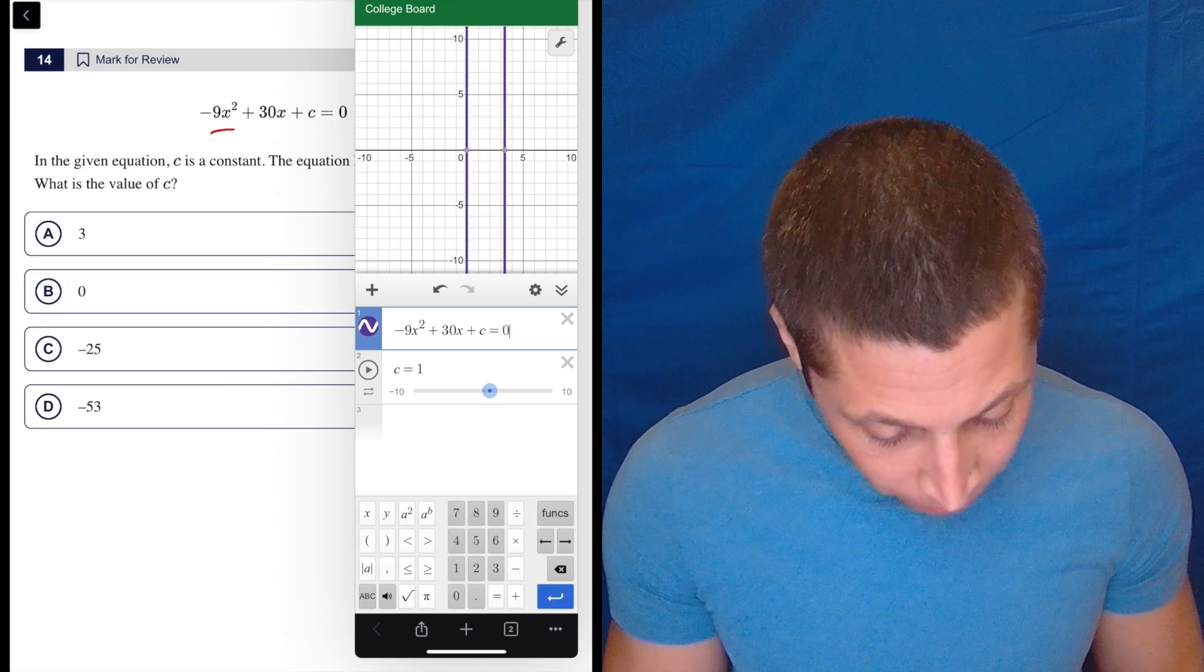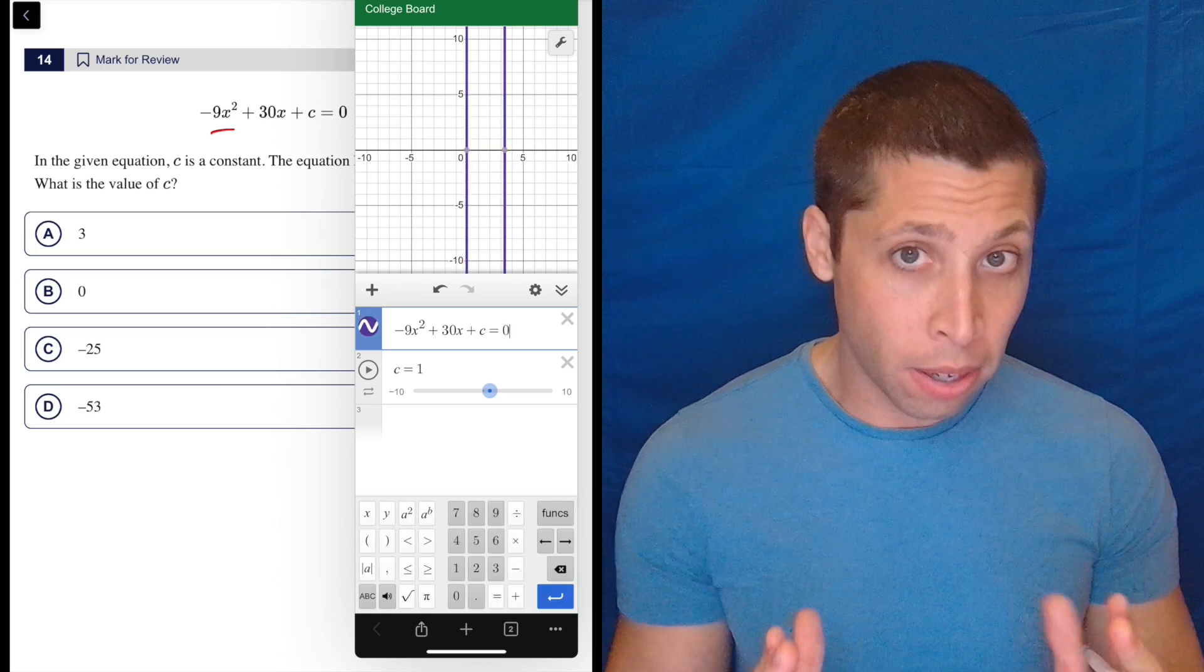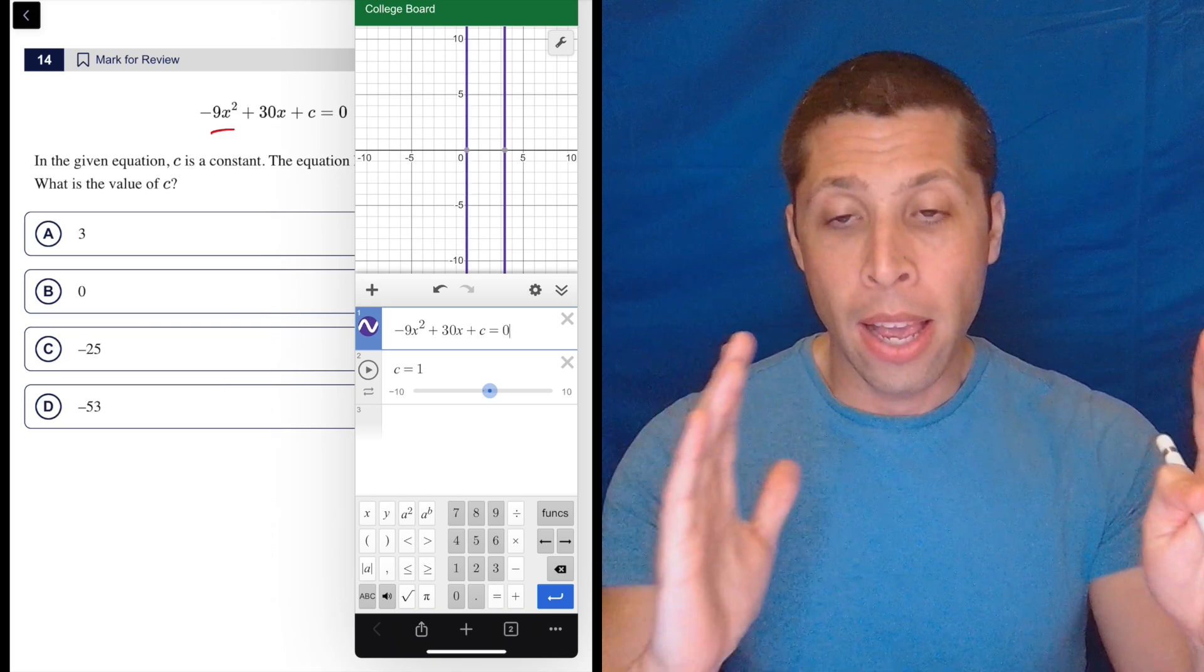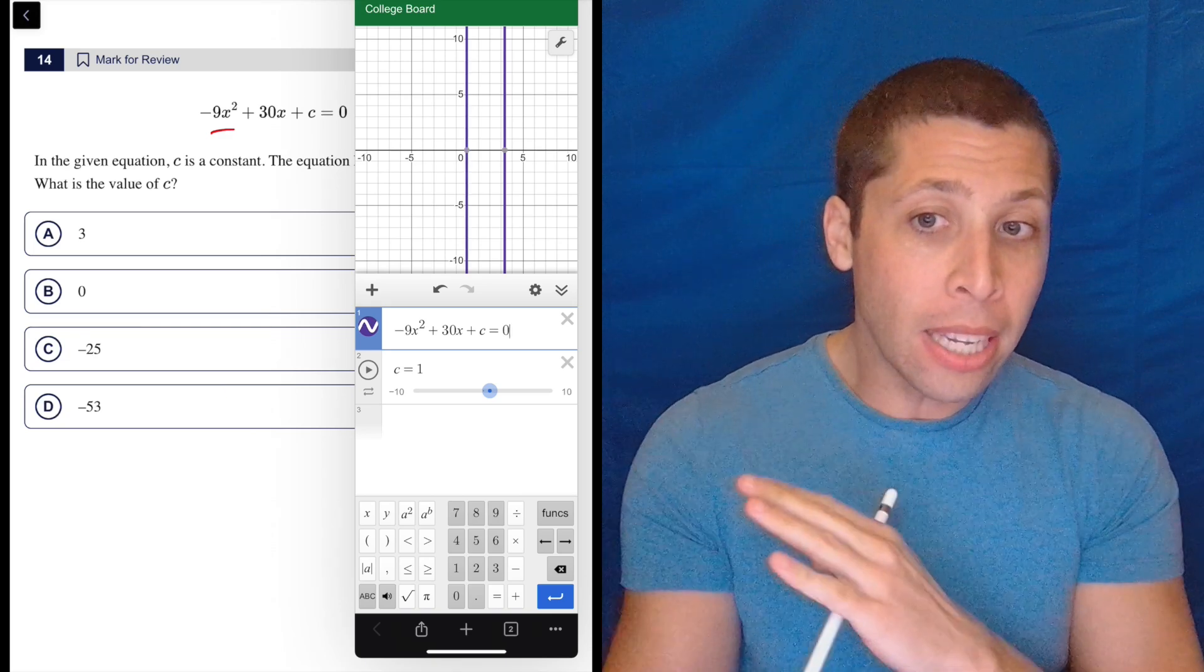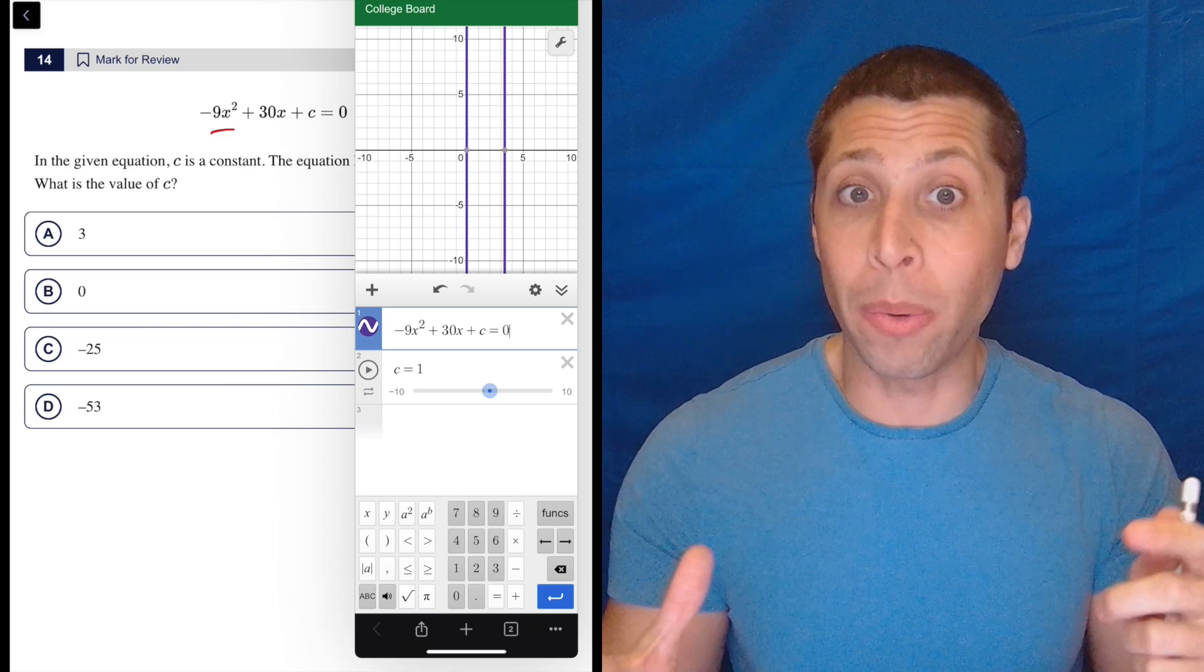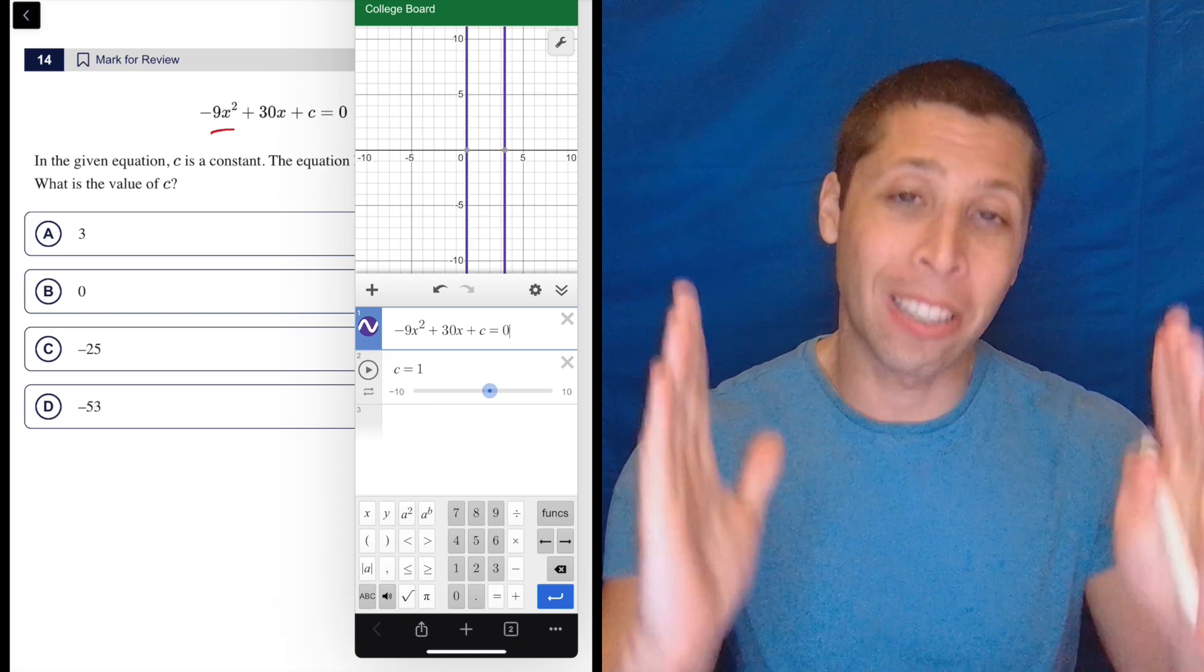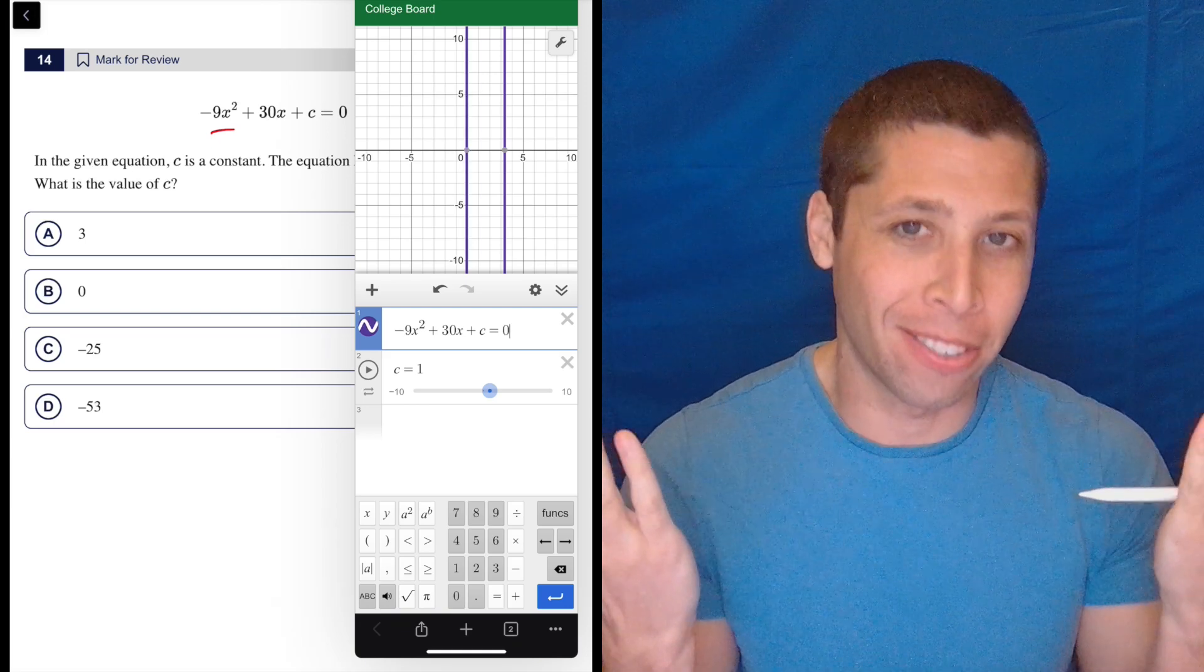But you can see that this particular version of this quadratic has two solutions where we have x-intercepts. Now if I put the equal zero here, those solutions are still there, but they're going to look like vertical lines. Now I could leave the equal zero because basically what it's doing is it's solving the equation for me and it's displaying the answers as vertical lines.